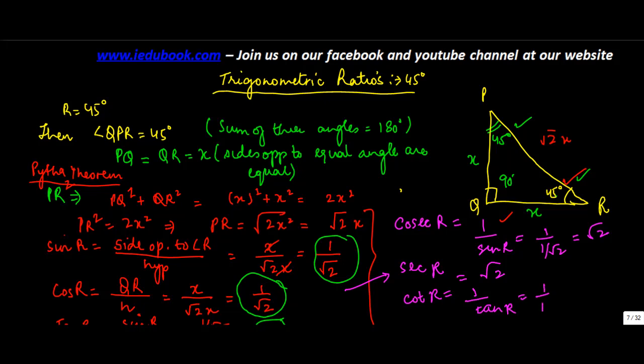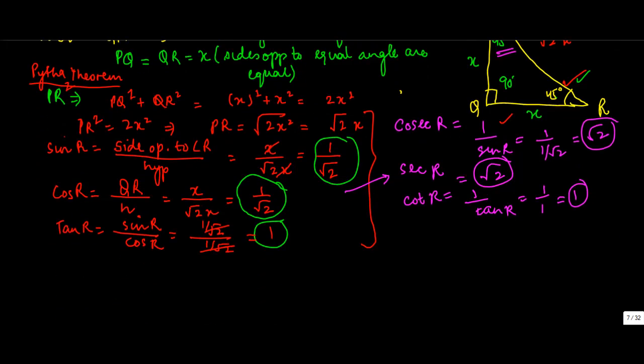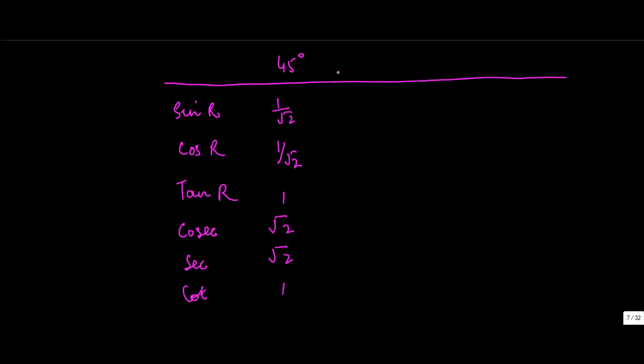So you have got all the 6 values for 45 degree. If you were to summarize them: sin R, cos R, tan R for 45 degrees, this is 1 upon root 2, this is 1 upon root 2, this is 1. Then cosec, sec and cot: root 2, root 2, and 1. So we are done for 45 degree.